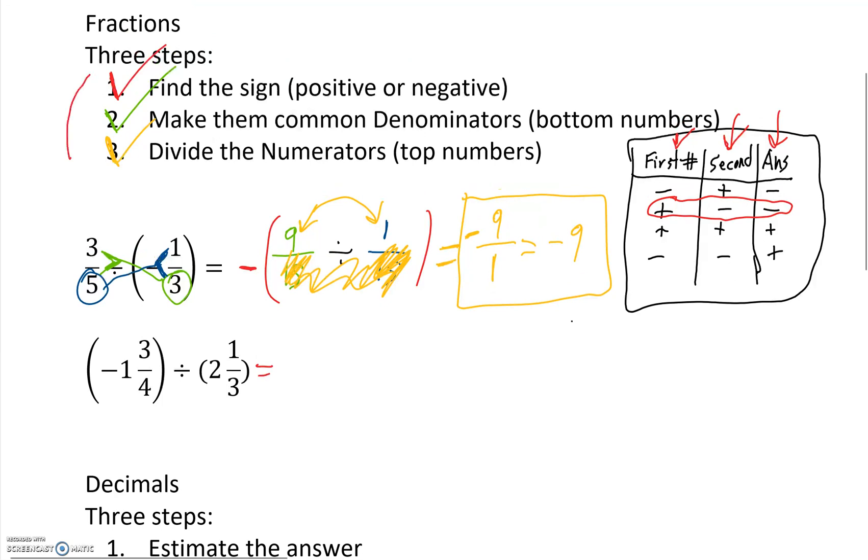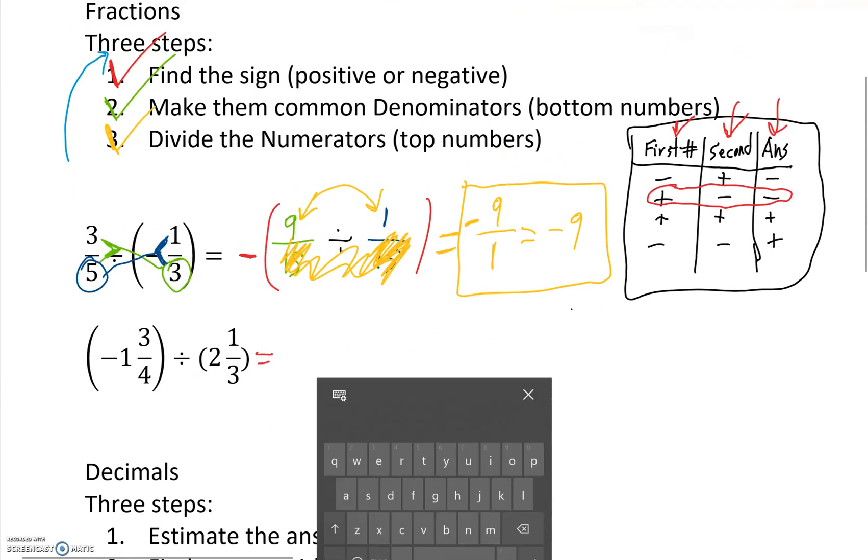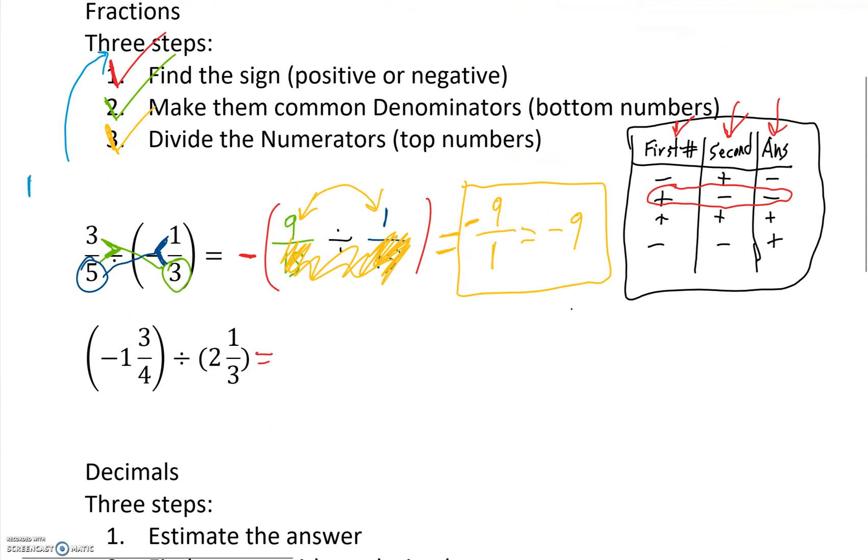So sometimes there's a step ahead of this one. Let's call it a blue step. A step ahead of this one. Sometimes, if there's a mixed fraction, we'll make it improper. If necessary, there's one extra step.